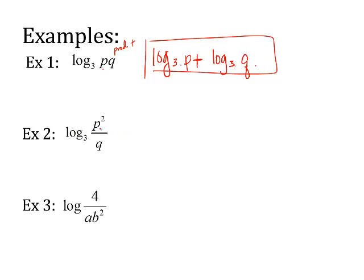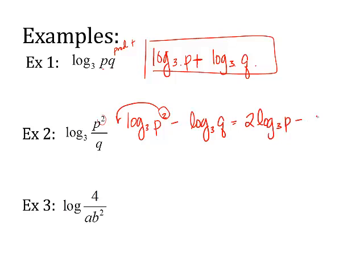Number two, I've got division, so I'm going to use quotient rule, and I have a power, so I've got to use the power rule. So log base 3 of p squared minus the log base 3 of q. Now, I'm not finished because this still has a power. That power has to come to the front. So what I write is 2 times the log base 3 of p minus the log base 3 of q.